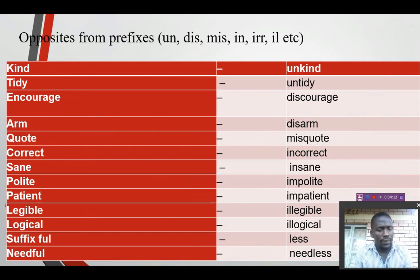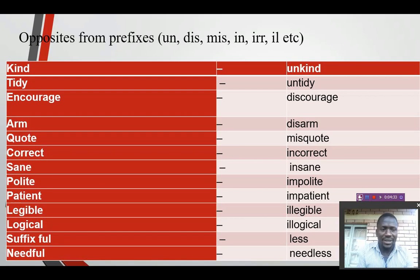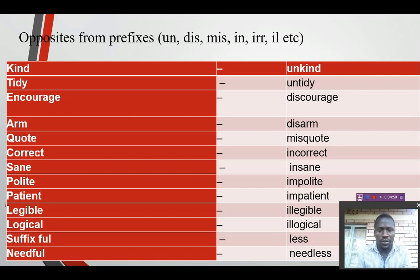Opposites from prefixes. For example, we have kind — the opposite of kind is unkind, using the prefix un-. And tidy and untidy, encourage and discourage, arm and disarm, quote and misquote, correct and incorrect, sane and insane, polite and impolite, patient and impatient, legal and illegal, logical and illogical. Also prefixes like -less: need and needless, and others.